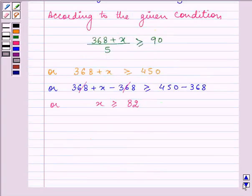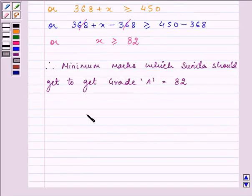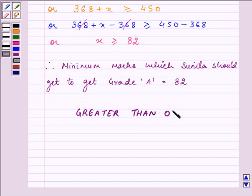So, this states that minimum marks which Sunita should get to get grade A is equal to 82, or we can write that her marks should be greater than or equal to 82.